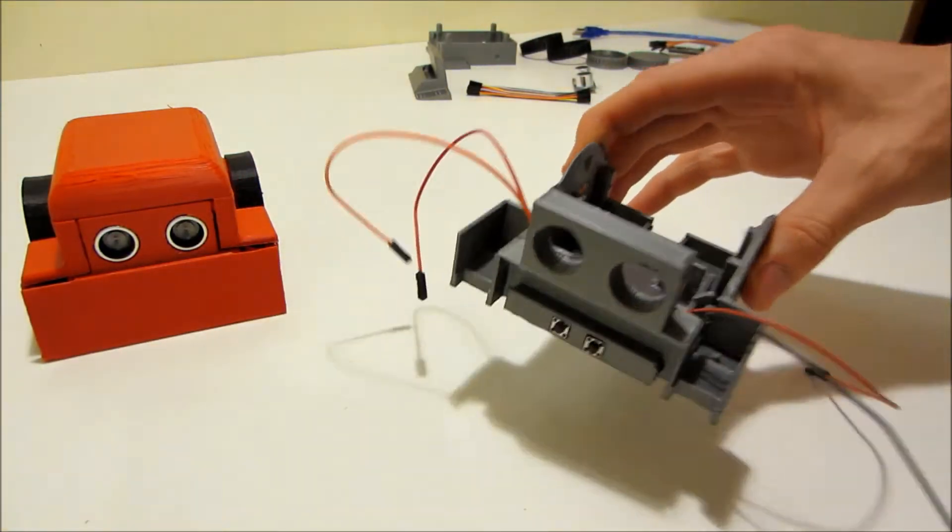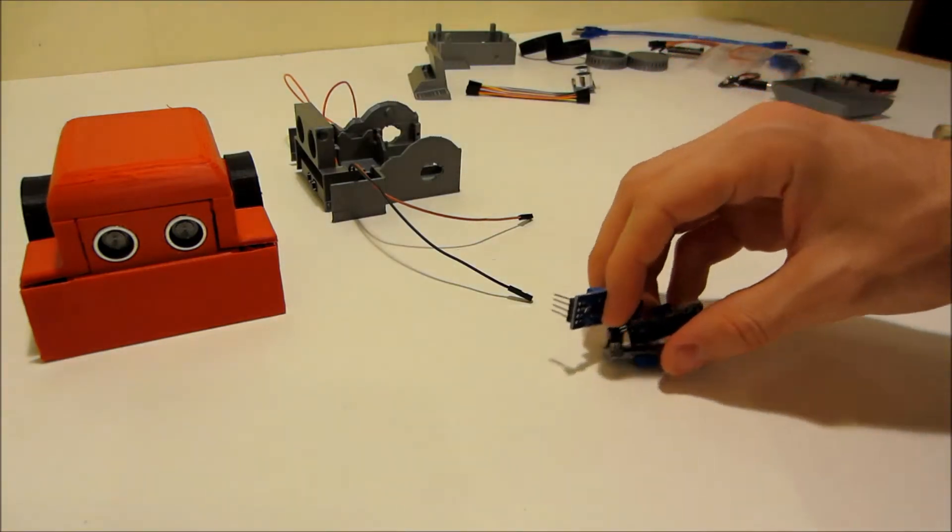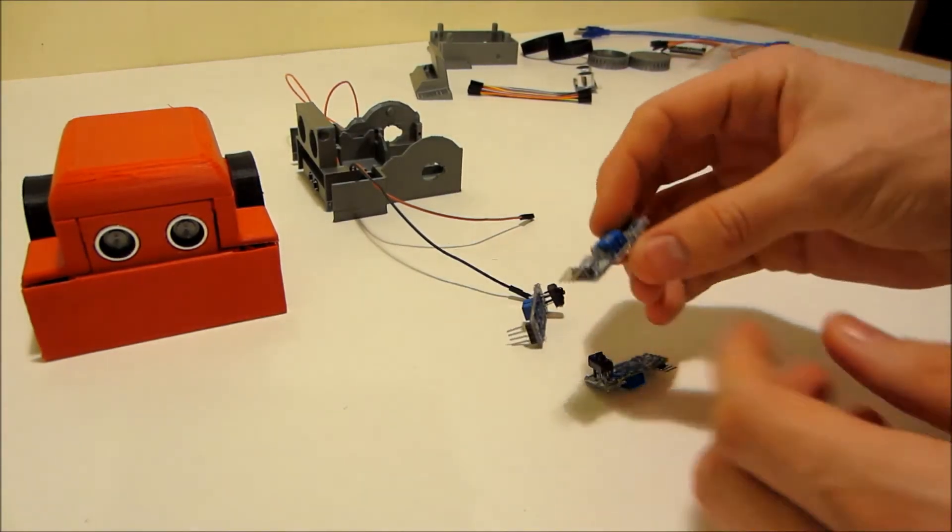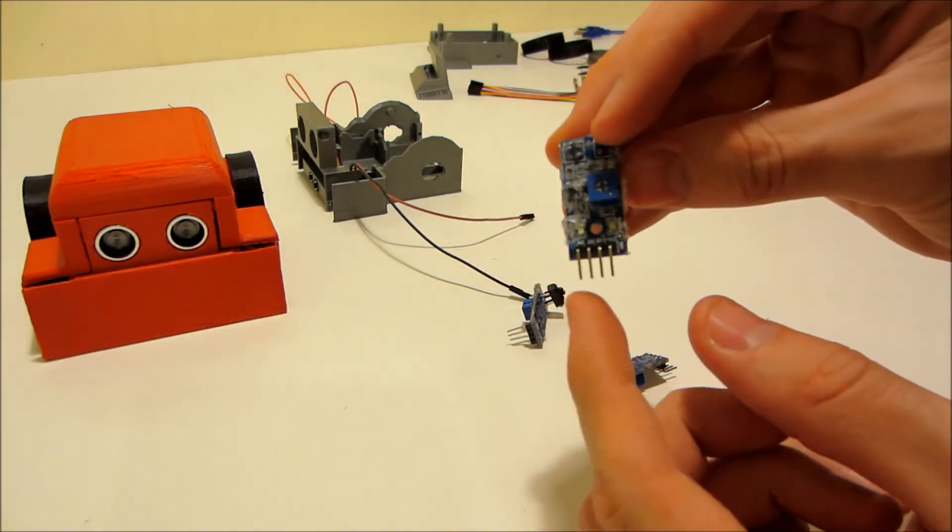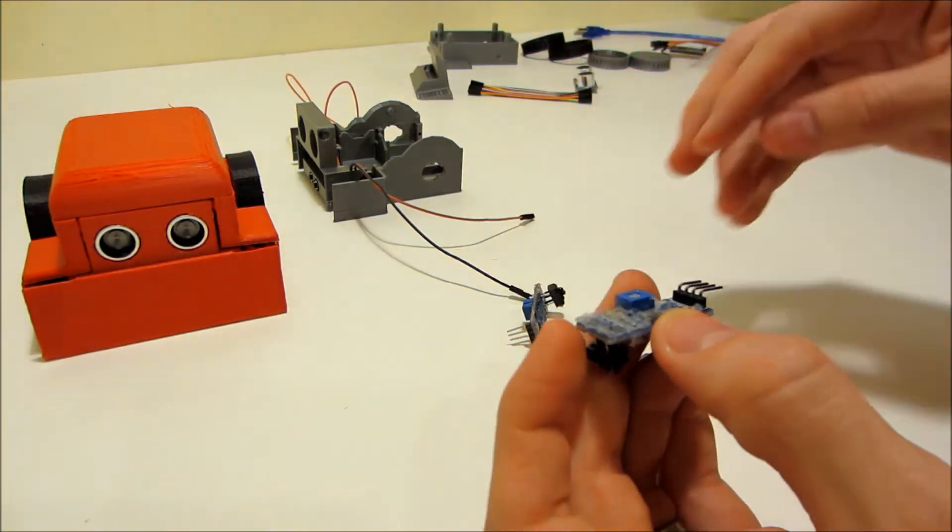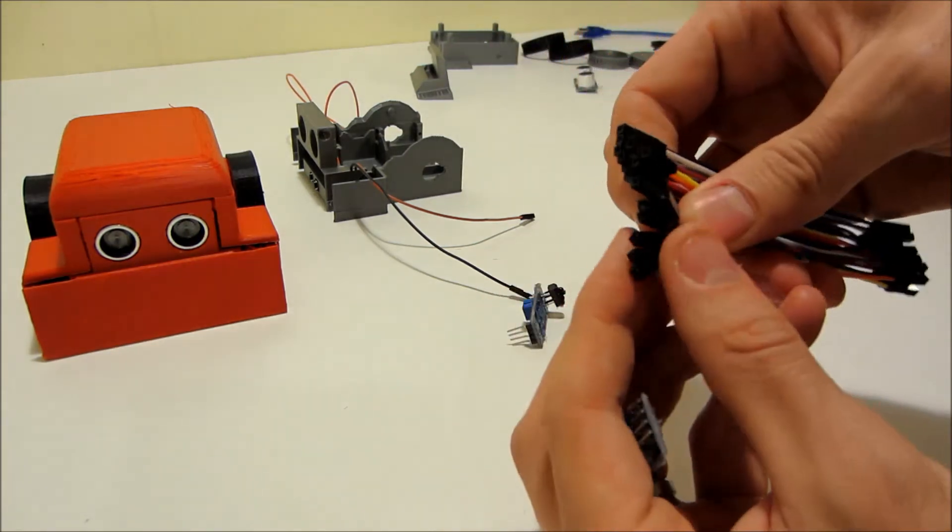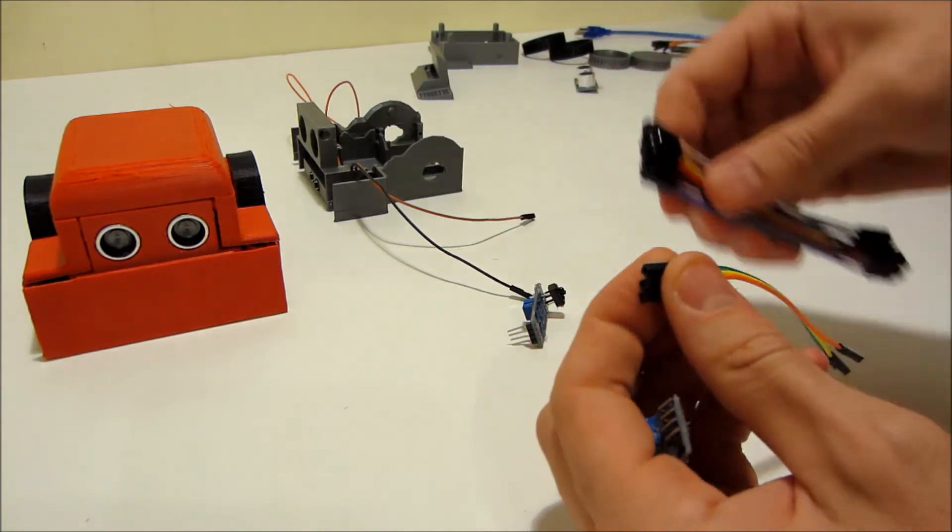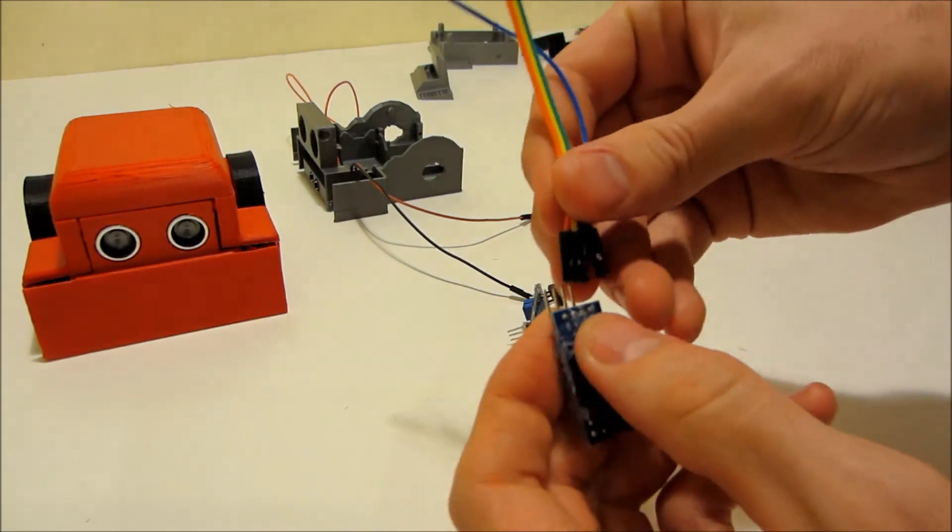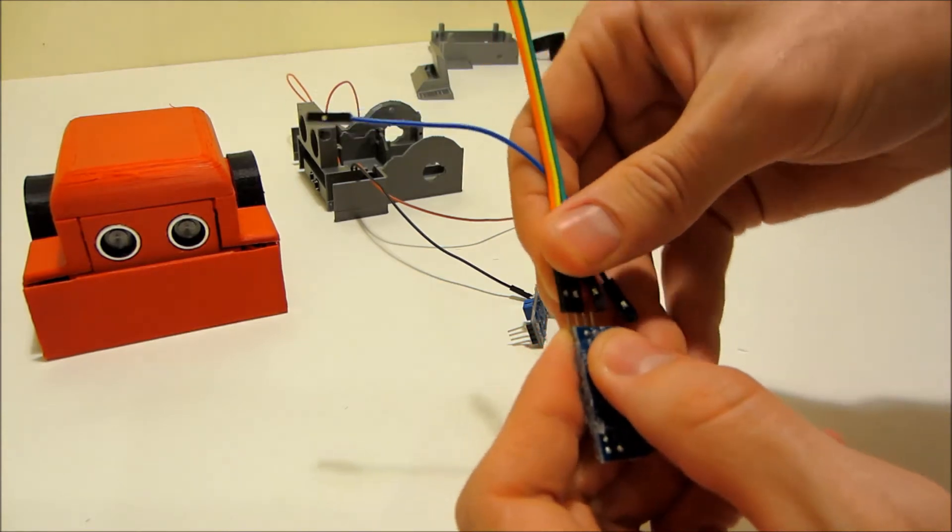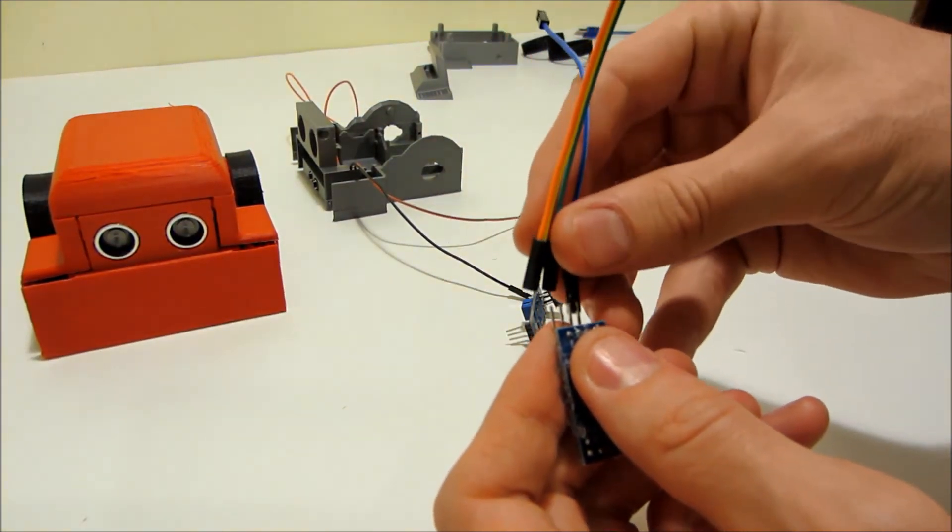Next thing I'm going to do is set this aside for the moment and pull out our three edge sensors. Now they arrive like this with their little wires oriented backwards, but we want to reorient them. So I'm going to take a couple of our wires, better use four, and push them onto the prongs to help support them as I bend them the way that I want them to face.